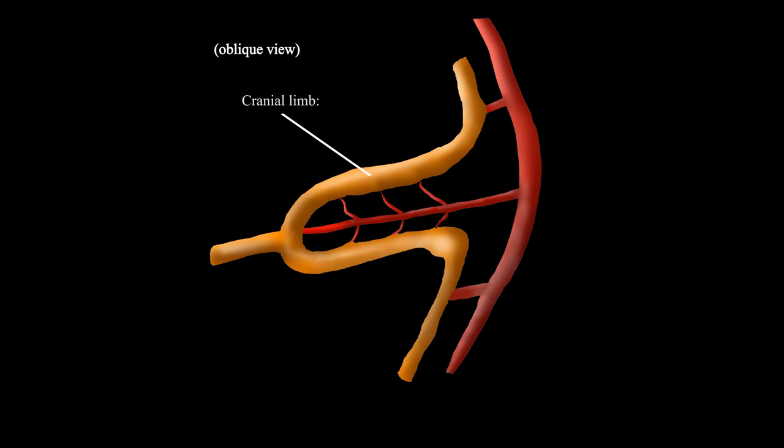The cranial limb of this midgut extension will ultimately form the distal duodenum, jejunum, and part of the ilium.